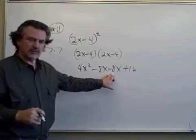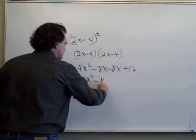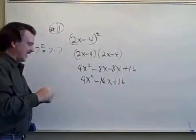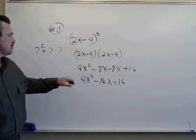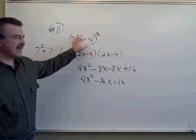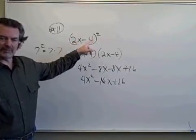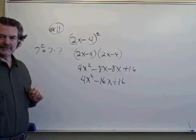We have like terms we can combine. 4x squared minus 16x plus 16. That trinomial is the product of those two binomials. Those two binomials we wrote the product because we wanted to raise that binomial to the second power. And that means you write the quantity down twice and multiply it.